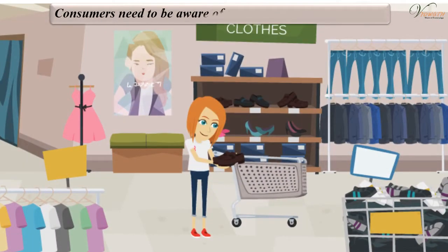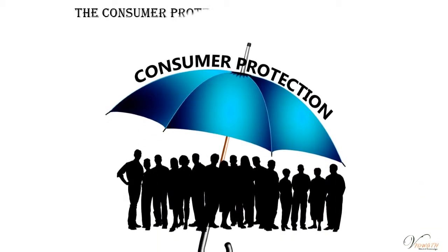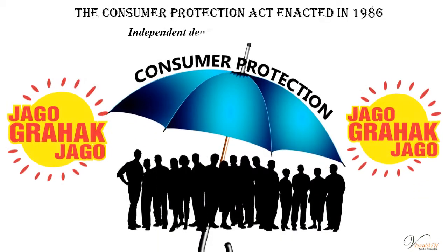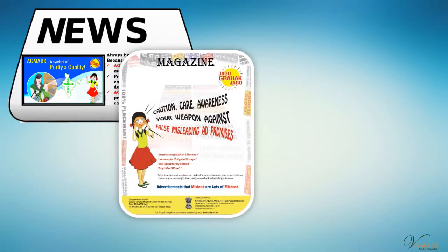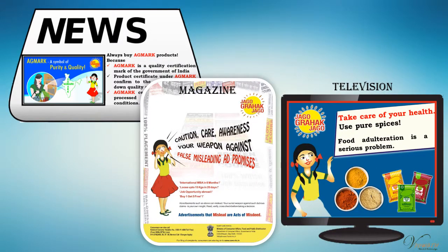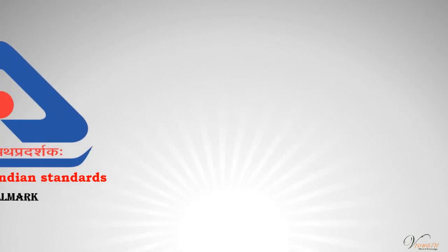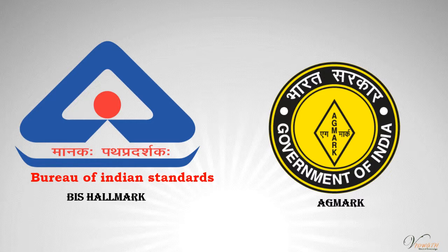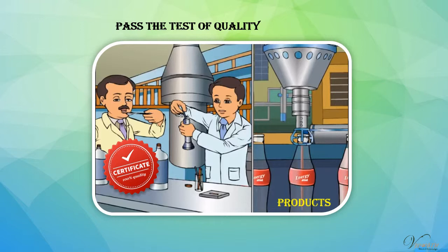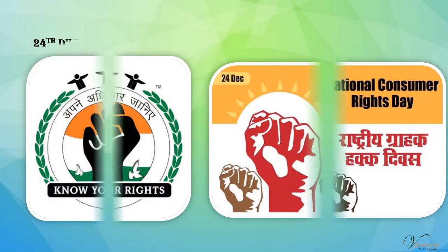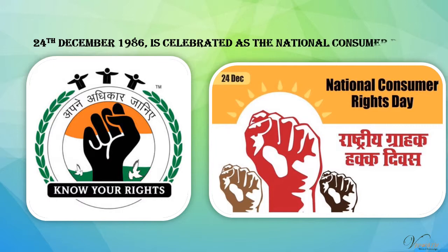Consumers need to be aware of the choices available to them. Under the Consumer Protection Act enacted in 1986, independent departments of consumer affairs were formed in the central and state governments. These departments regularly put out advertisements in newspapers, magazines, and on television to make consumers conscious of their rights. Several agencies like BIS, Hallmark, and Agmark test the quality of various products sold in the market. Only products that pass the quality test are certified, and for products crucial from a health or safety angle, certification is mandatory. 24th December 1986 is celebrated as the National Consumer Day.